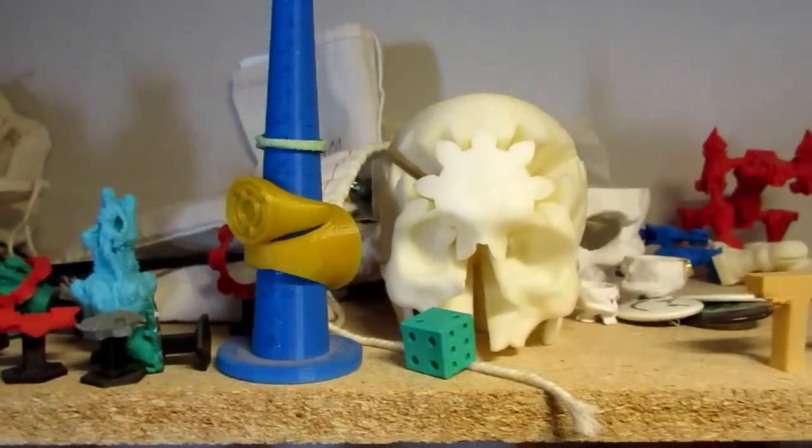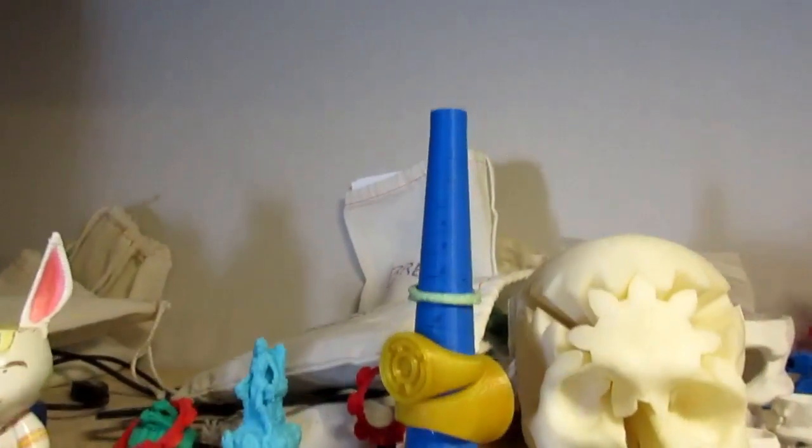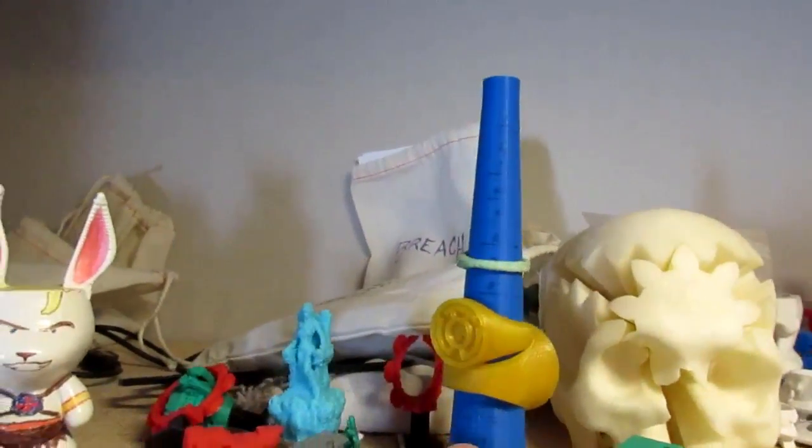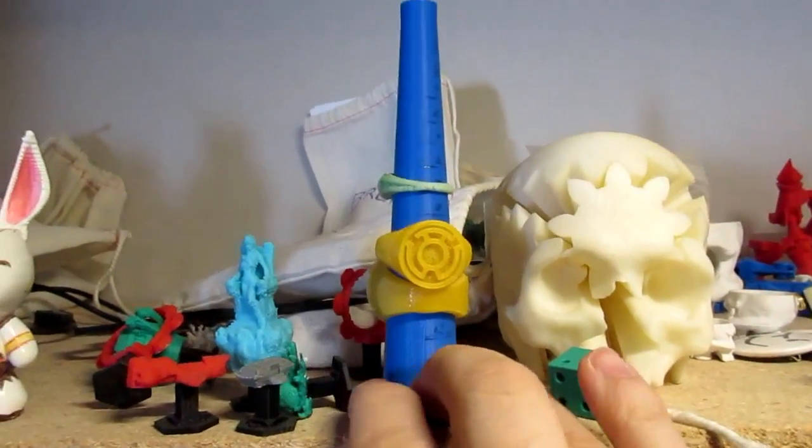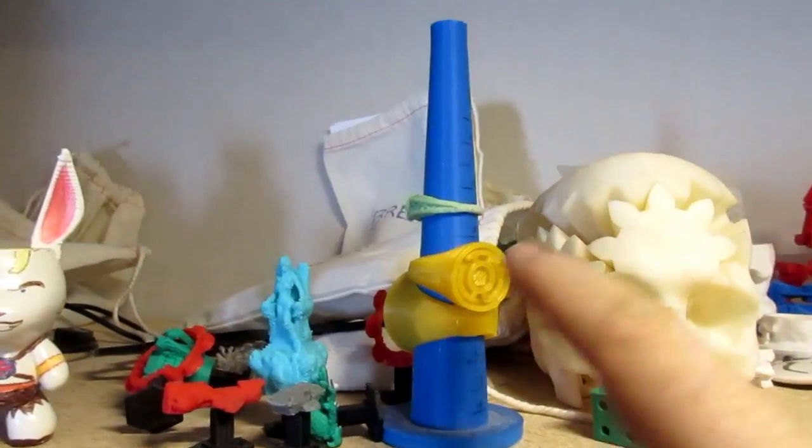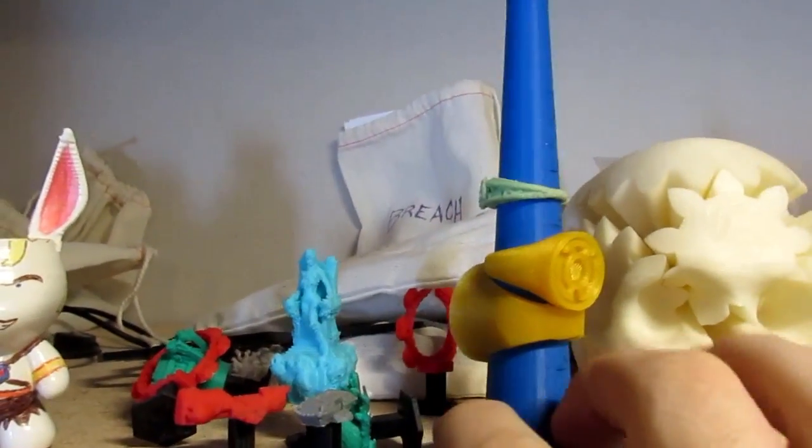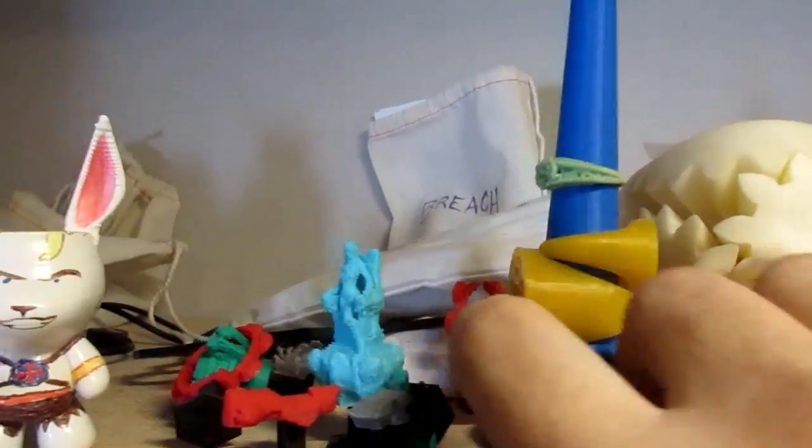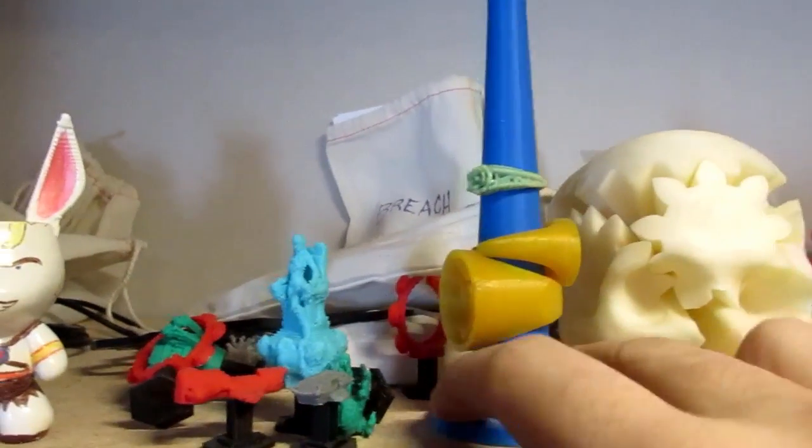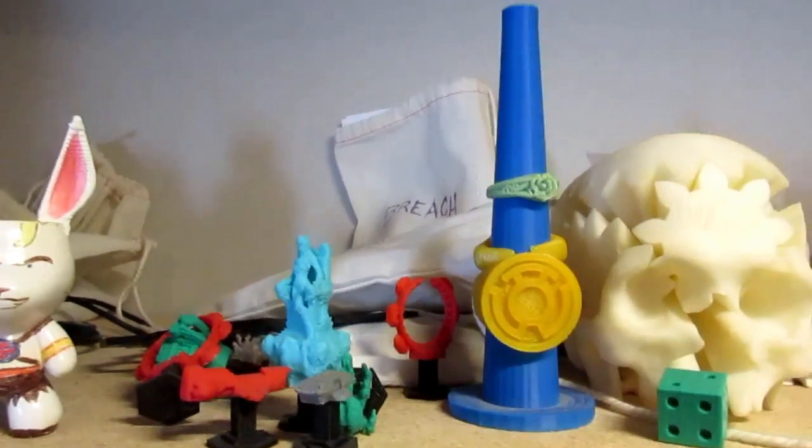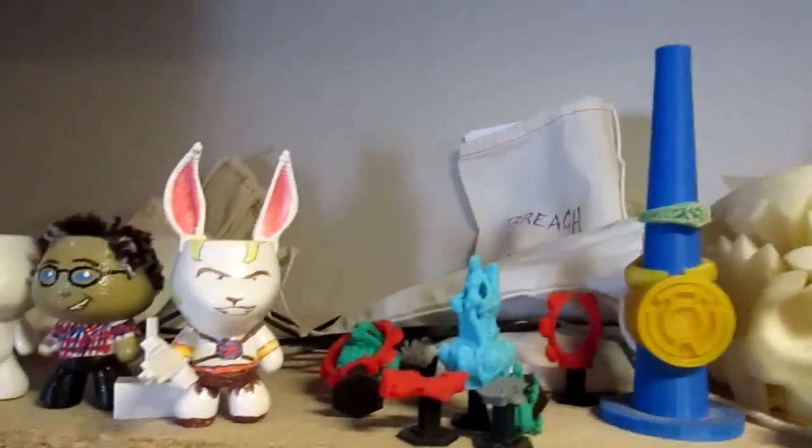This is a 3D printed dice. This is a ring holder, ring measuring thing. It's got the different ring sizes on it so I can tell how close my 3D printed rings came out, and I've got a couple of yellow lantern rings. I don't know why I went with the yellow lantern, but I did.